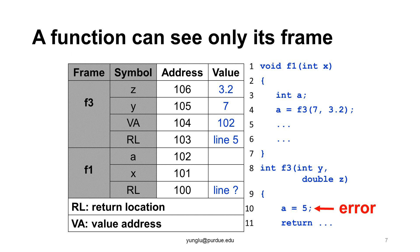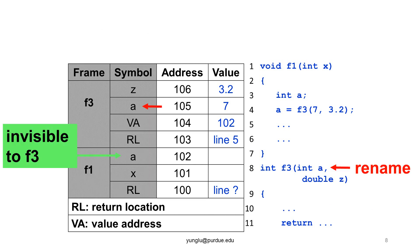A function can see only its frame. For example, inside F3, the variable a is not visible. Thus, if we want to assign 5 to a, GCC will tell us this is an error. Function F3 cannot see the variable a because a resides in the frame of F1. It is possible to use a as the name of an argument or a local variable in F3. However, this a is different from the a in F1 because they occupy different memory addresses.